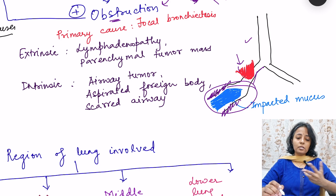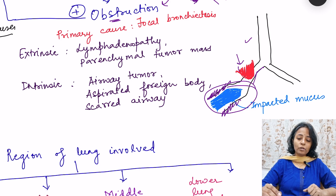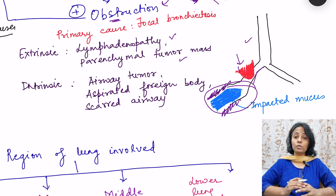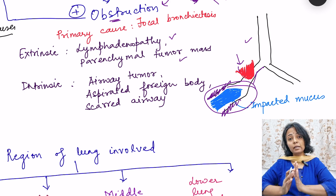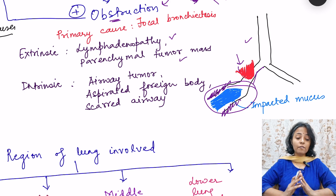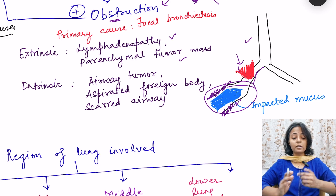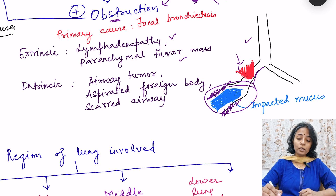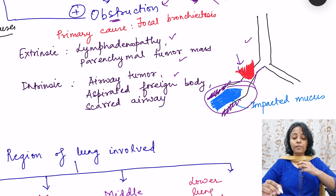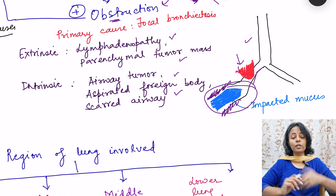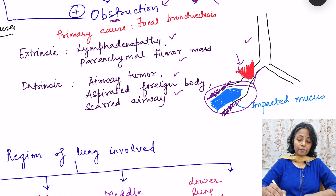What can be the causes? Extrinsic obstruction can be due to lymphadenopathy or a tumor mass compressing the airways. Intrinsic obstruction can occur if there is an airway tumor, an aspirated foreign body, or scarred airways.